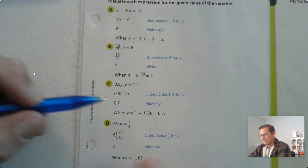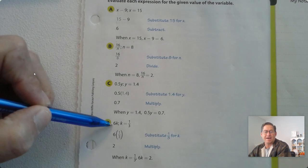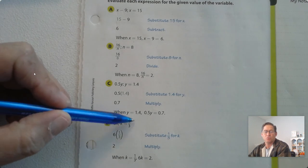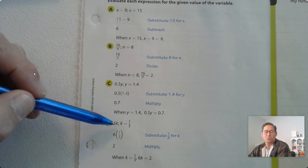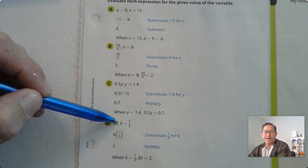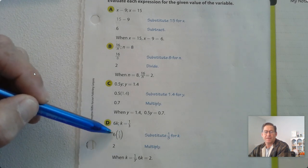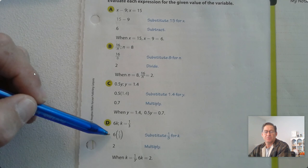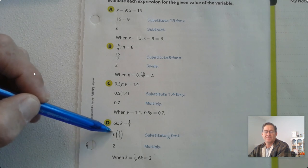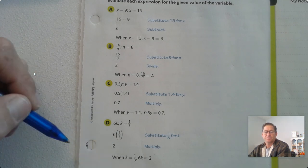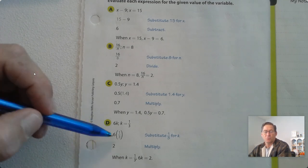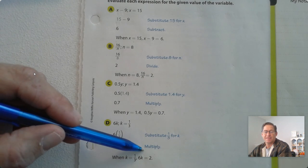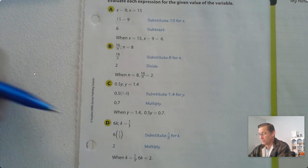Our last example: 6 times k, when k equals 1 third. We're going to substitute 1 third for k and go 6 times 1 third. So 1 third of 6 is 2. When k equals 1 third, 6 times k is 2.